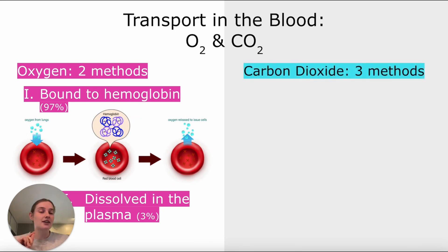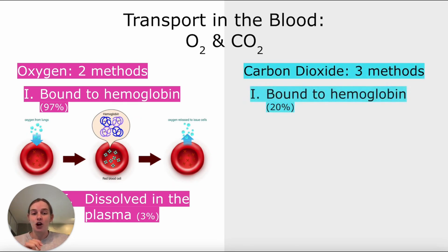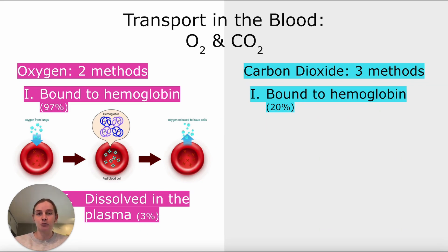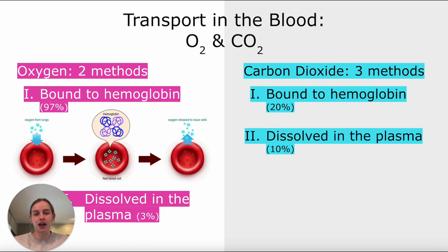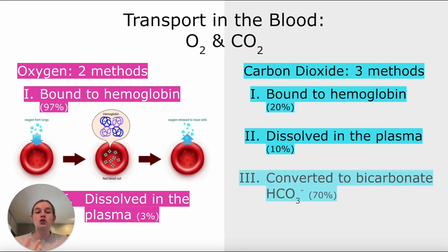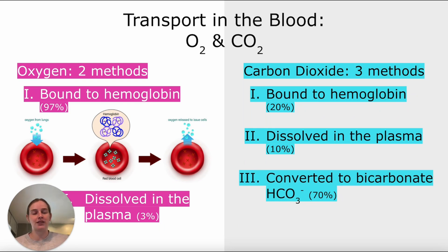Instead of two methods for carbon dioxide, we actually have three. It is also bound to hemoglobin — though some people don't necessarily know this at first — and only 20% of the carbon dioxide in our blood is going to be found in that form, written as CO2Hb. The second possibility is that CO2 is just dissolved into the plasma, and that makes about 10% of the carbon dioxide in the blood. And lastly, the majority of our carbon dioxide is actually converted into bicarbonate and then dissolved into the plasma and transported that way.